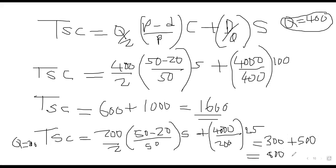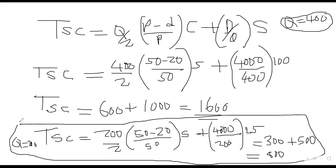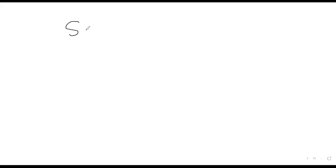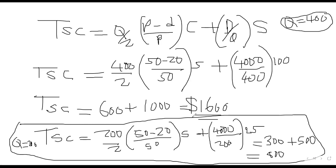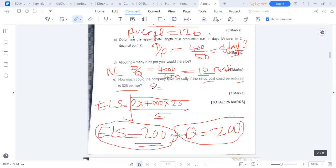Savings = old total stocking cost − new total stocking cost = $1,600 − $800 = $800. So the company saves $800 annually. This marks the end of the question from the May 2023 exam.